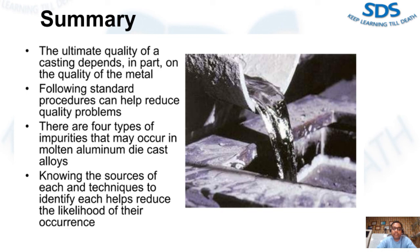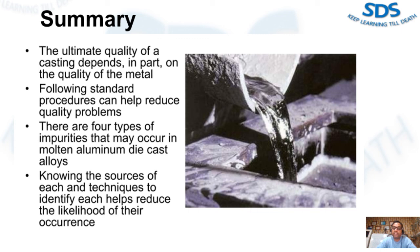The ultimate quality of casting depends in part on the quality of the metal. Following standard procedures can help reduce quality problems. There are four types of impurities that may occur in molten aluminum die cast alloy. It is important to know the source of each and the techniques to identify each in order to reduce the likelihood of their occurrence.